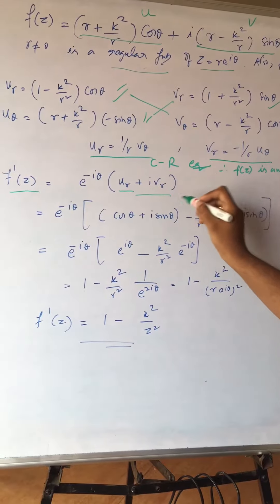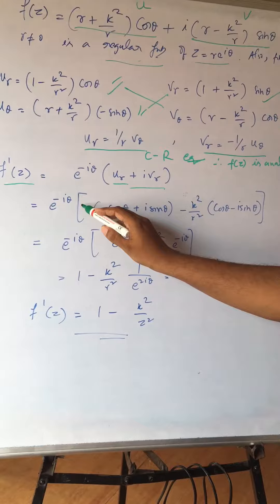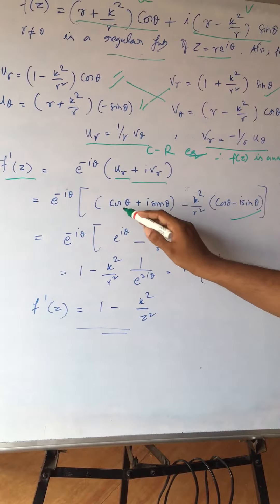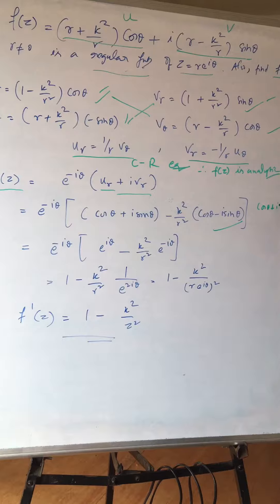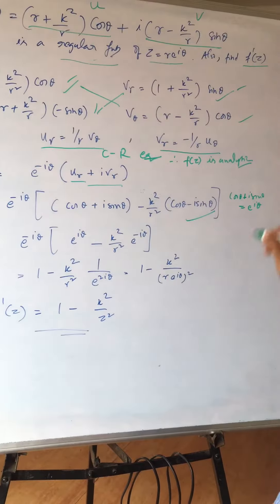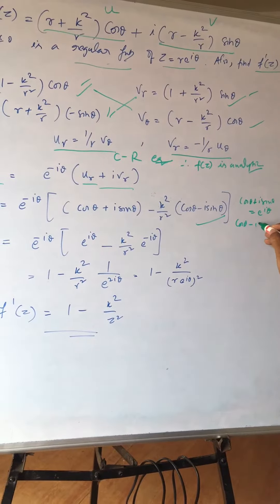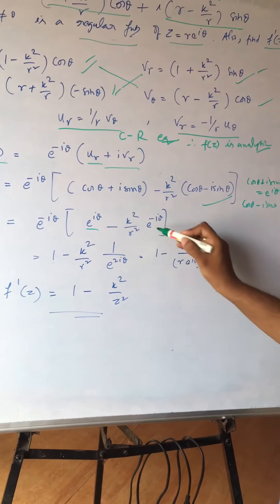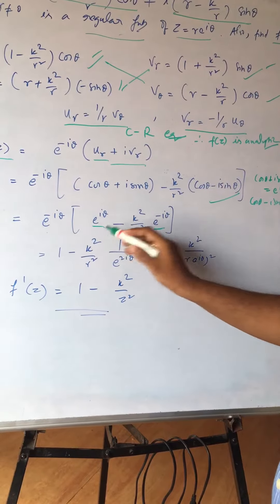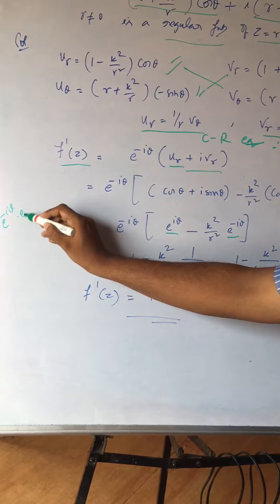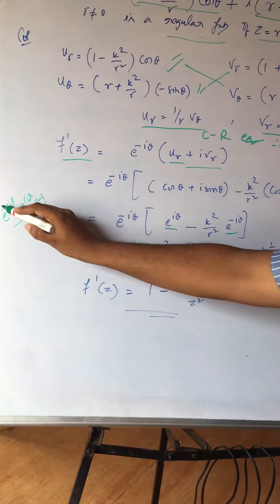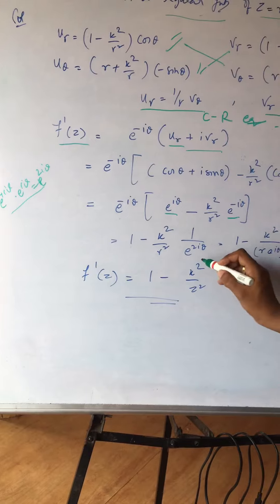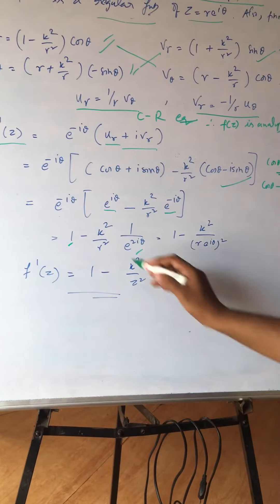Taking the common factor e^(-iθ) outside, I get the substituted result. Now we know that cosθ + i·sinθ = e^(iθ) and cosθ - i·sinθ = e^(-iθ). Using these identities, e^(-iθ)·e^(iθ) = 1, and where there is a plus, the exponents combine to give e^(2iθ), since iθ + iθ = 2iθ.